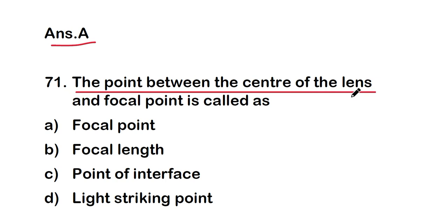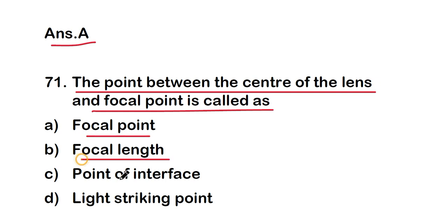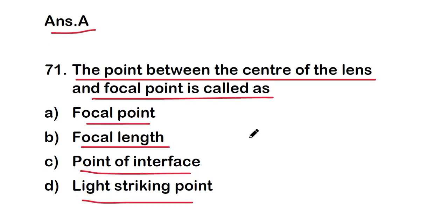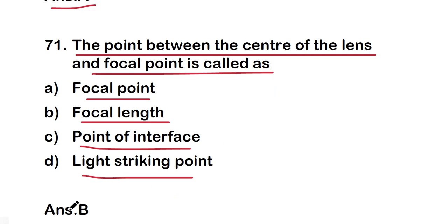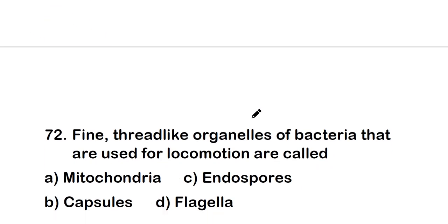Next question: the point between the center of the lens and the focal point is called — focal point, focal length, point of interface, or light striking point? The right answer is option B — focal length. The point between the center of the lens and the focal point is called the focal length.